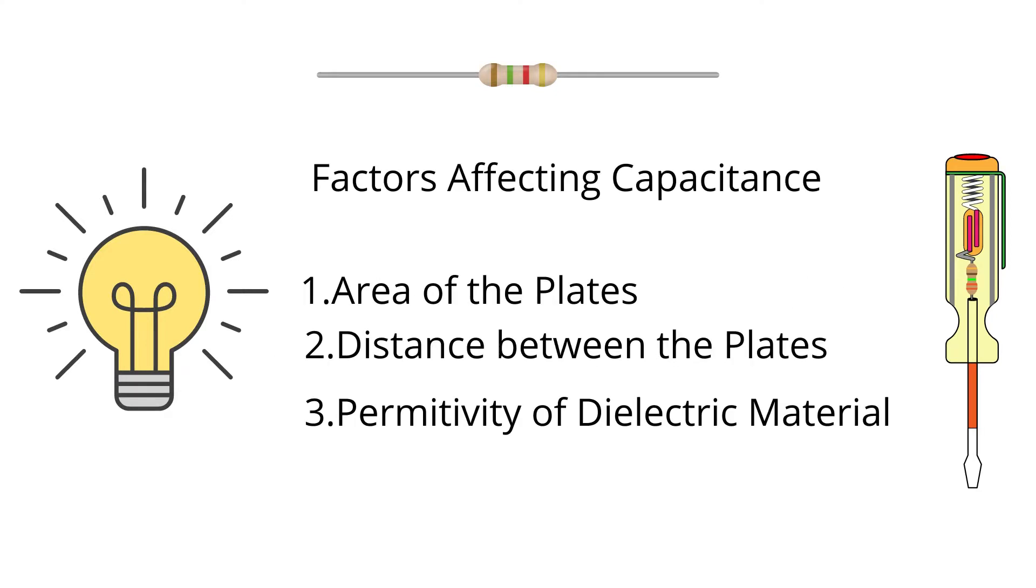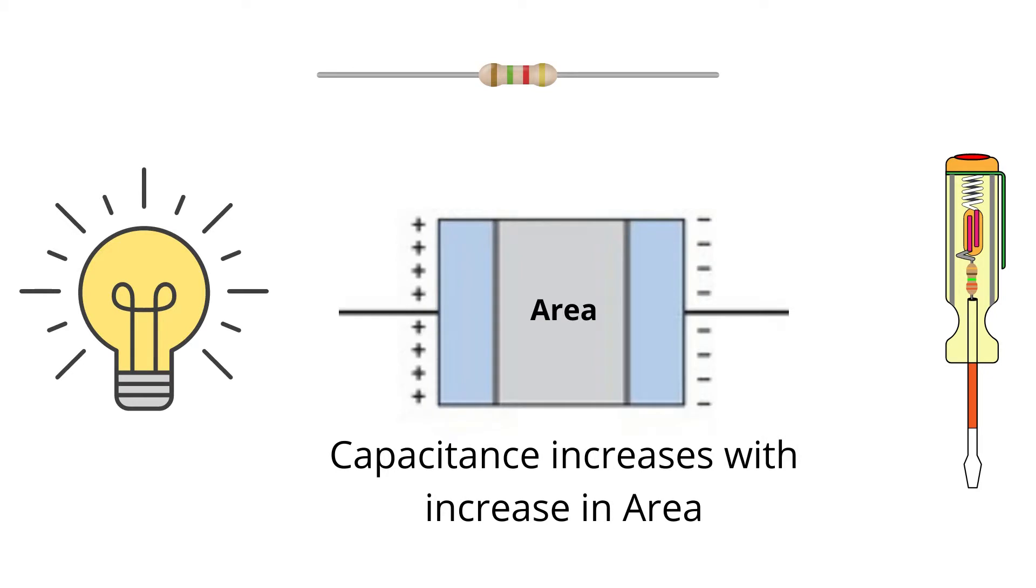The area of the plates, the distance between the plates, and the permittivity of dielectric material. Let us see how these factors affect the capacitance. As area of the plates increases, the amount of charge that can be stored across the plates also increases, which increases the capacitance of the capacitor.